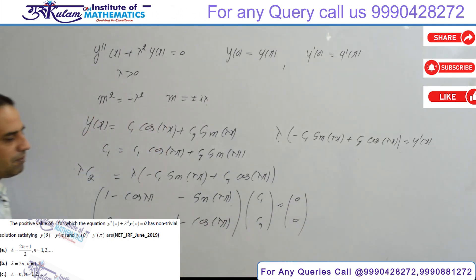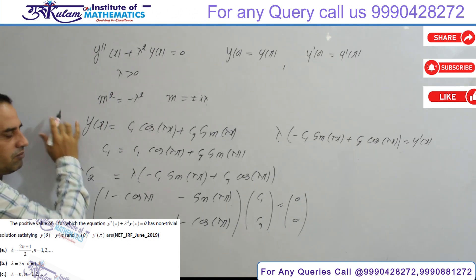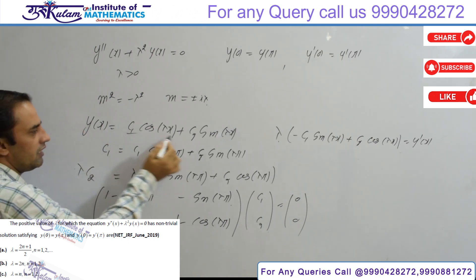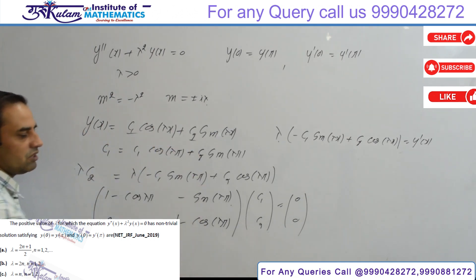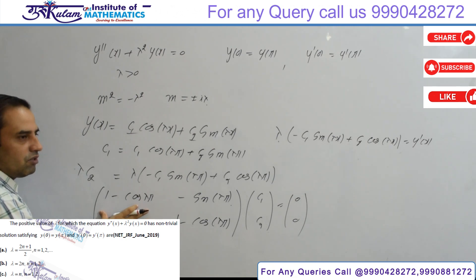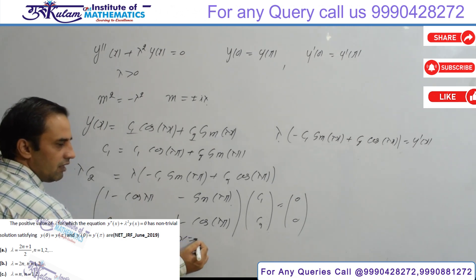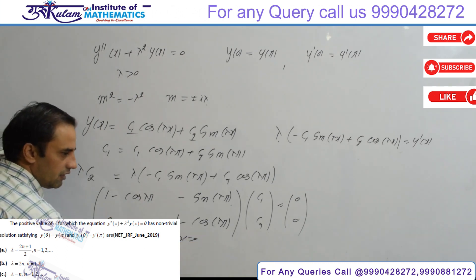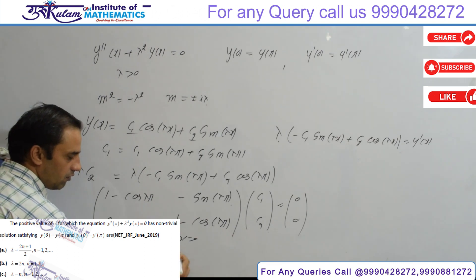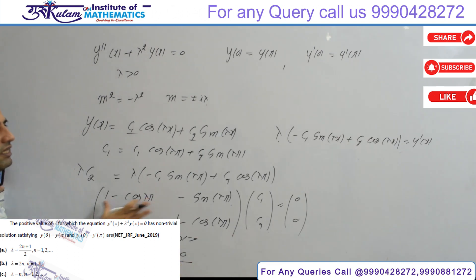This system has a non-trivial solution because the differential equation can have a non-trivial solution, meaning c₁ or c₂ is non-zero. For the system to have a non-trivial solution, the determinant of the coefficient matrix A must equal zero.